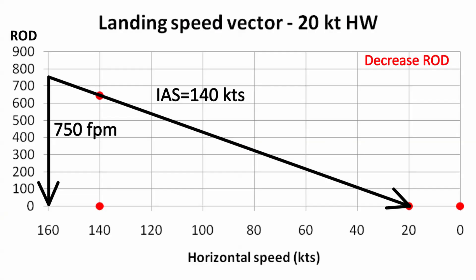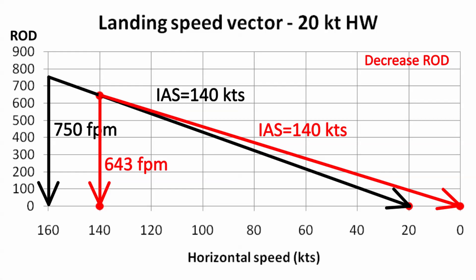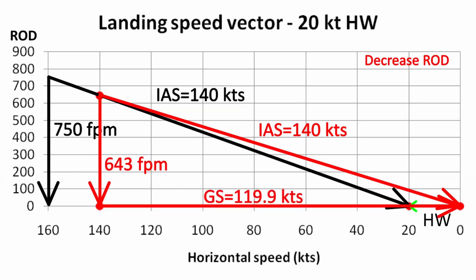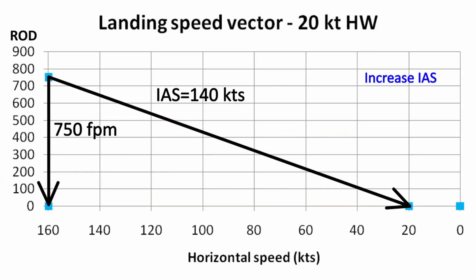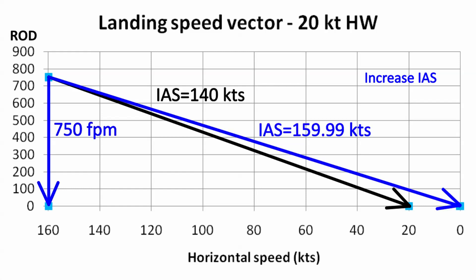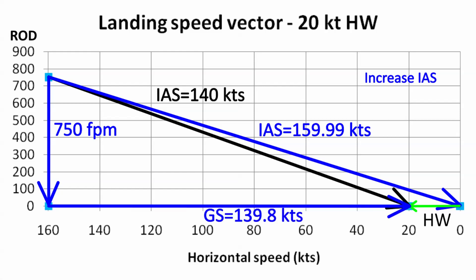Let's look at the 20 knot headwind, starting again with the no-wind vectors. We can reduce the rate of descent to 643 feet per minute while keeping the airspeed at 140 knots. The headwind will reduce our ground speed to only 119.9 knots, and the vertical track made good — shown in yellow — has the required 3.03 degree slope. Alternatively, in the face of a headwind, we can speed up: keeping the rate of descent at 750 feet per minute but increasing the instrument airspeed to just under 160 knots. The headwind reduces our ground speed to 139.8 knots, and the true track shown in yellow has the required angle.